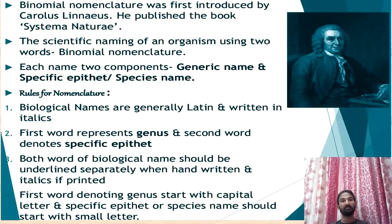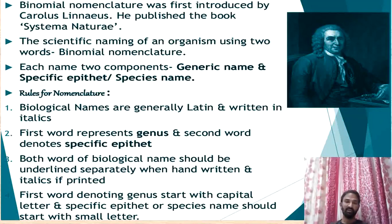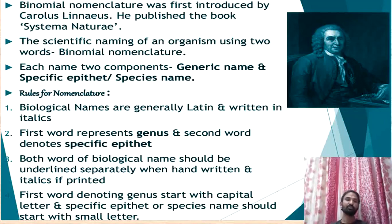For example, the mango scientific name is Mangifera indica. Mangifera is the genus name (noun of the plant) and indica is the species name (adjective), which means mango plants are mainly distributed in India — that is why it is called indica. So Mangifera indica is the scientific name of mango.